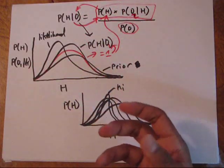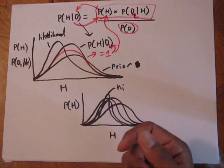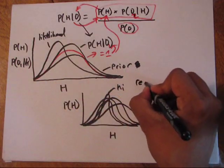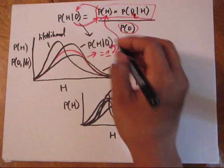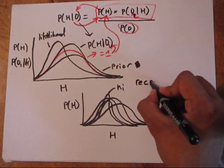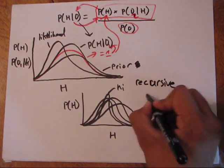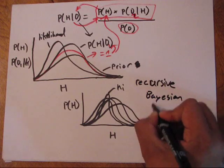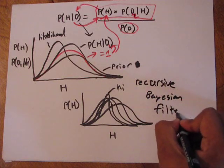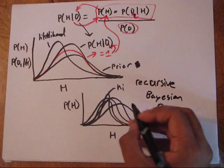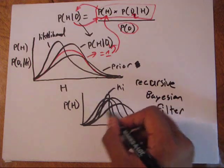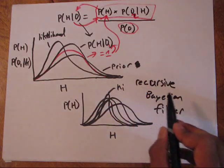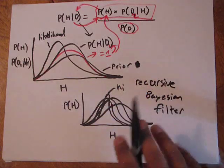That's the idea of Bayes and that's the power of Bayes — it allows you to iteratively update your data. This is sometimes called a recursive Bayesian filter, because you're calling back onto the function itself, filtering out background noise towards your state. And now we'll talk about an example.